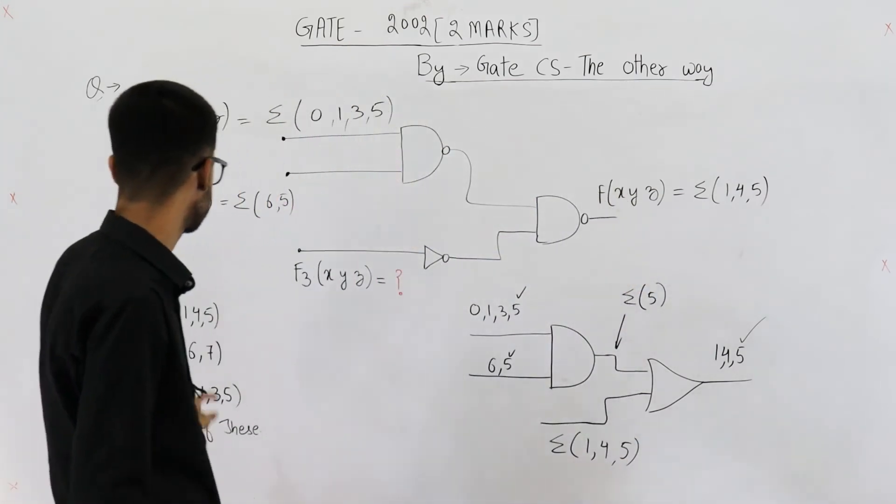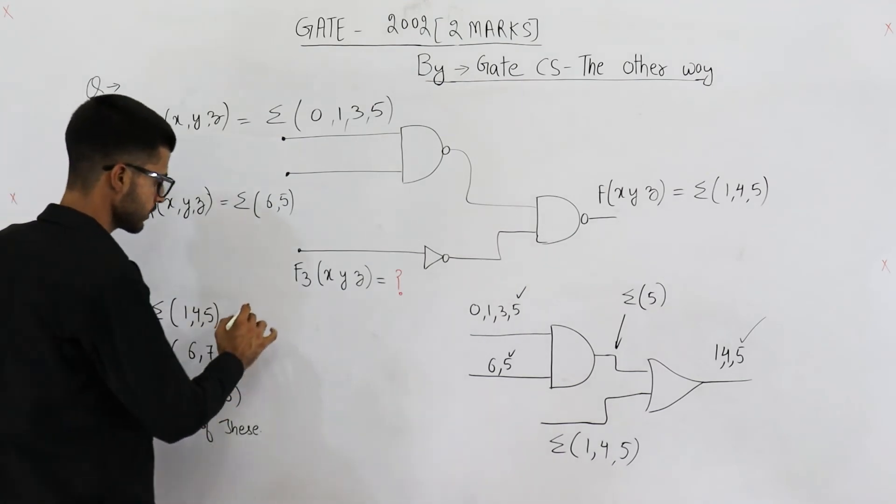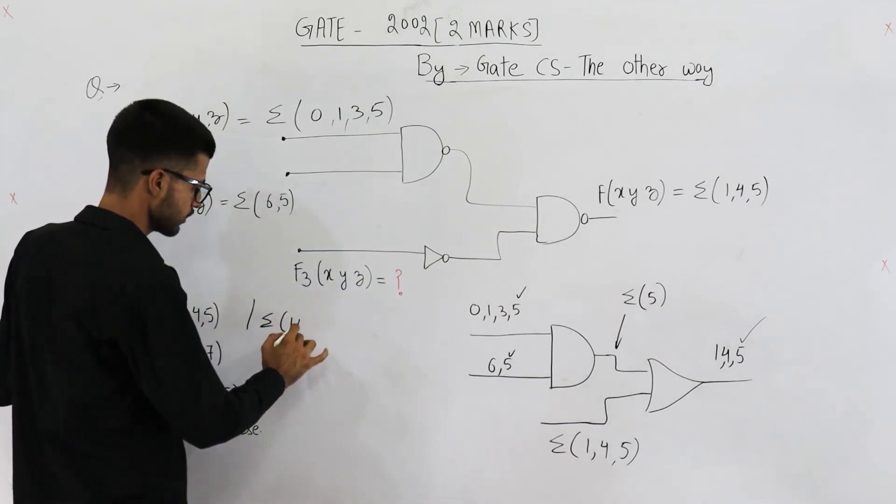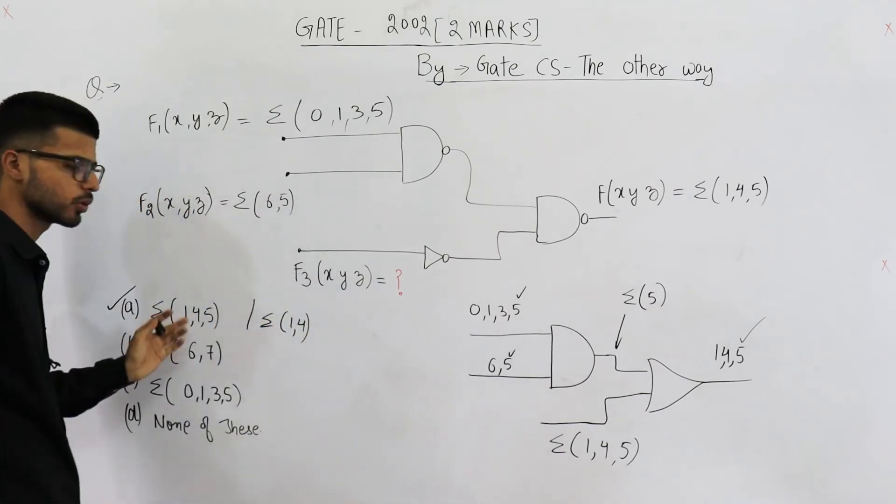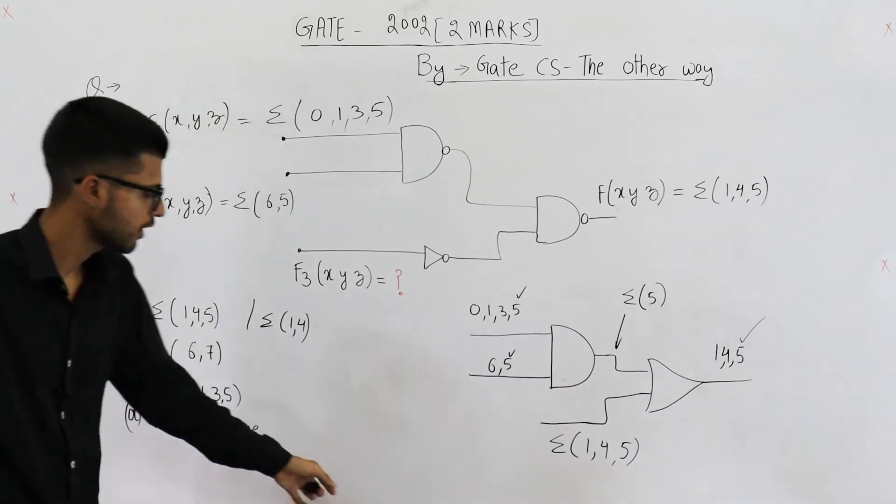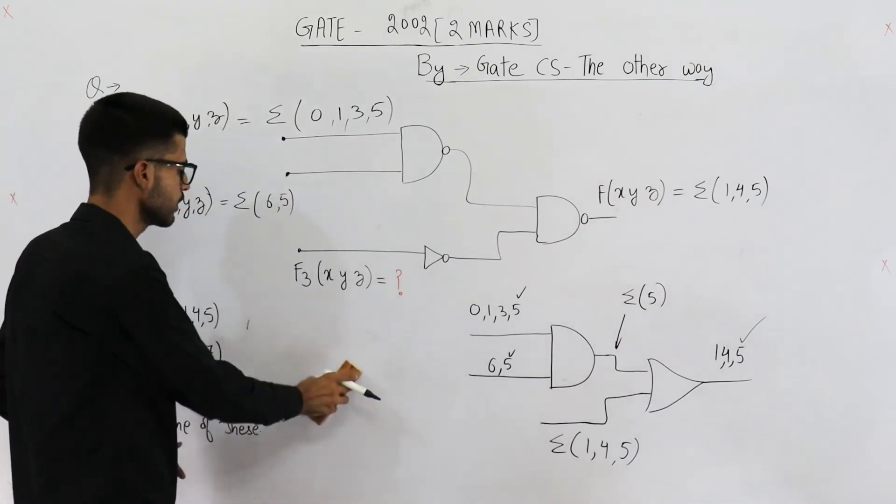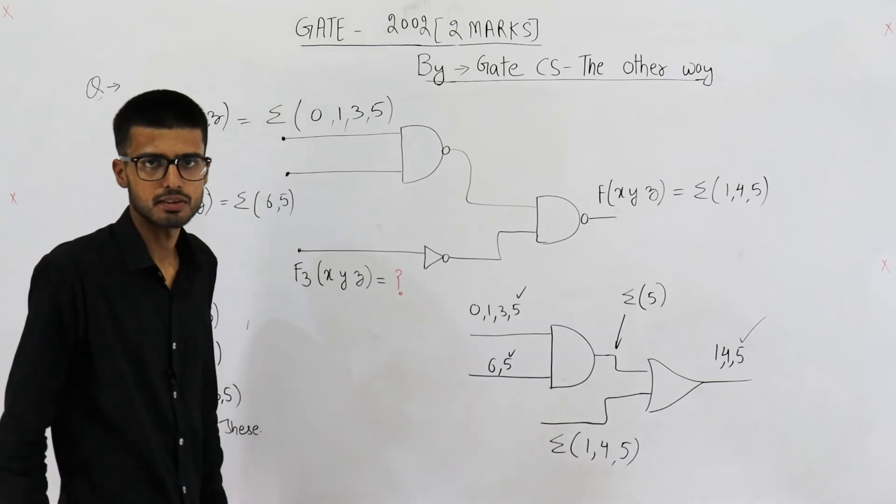So this question can have two answers. First one is this, second one is sigma(1,4). Both of these are correct, but only one, four, and five is present in the options, so you can assume it to be your answer.